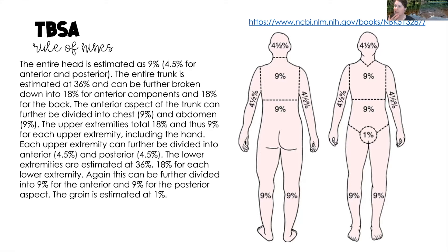Moving on to the trunk, the entire anterior trunk is 18% and the entire posterior trunk is 18%. However, that can be further divided into upper anterior, lower anterior, upper posterior, and lower posterior at 9% each. The entire arm is 9%, further broken down into the anterior aspect at four and a half percent and the posterior aspect at four and a half percent.